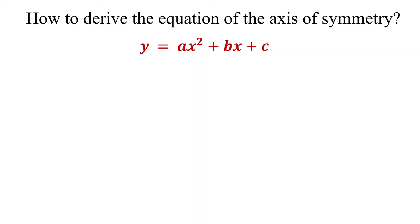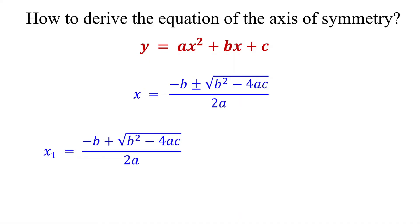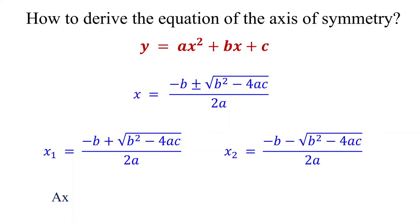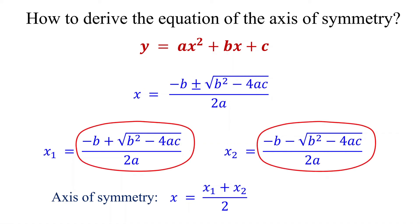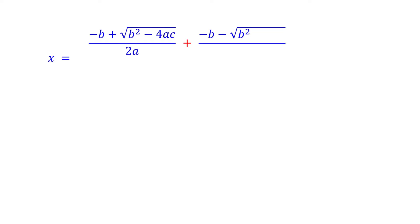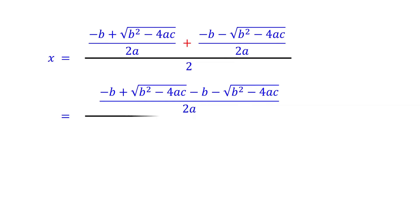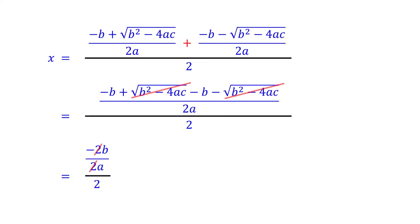Let me quickly show you how to derive the equation of the axis of symmetry for a quadratic function in standard form. For the corresponding quadratic equation, we can find the solutions using the quadratic formula, giving two solutions — one with the plus sign and one with the minus sign. These solutions are the x-intercepts of the corresponding quadratic function. The axis of symmetry is at the midpoint of the x-intercepts, found by adding them and dividing by 2. Substituting and simplifying: the square roots cancel because they are the same value with opposite signs, leaving negative 2b in the numerator. This reduces to negative b over 2a, which is the equation of the axis of symmetry.